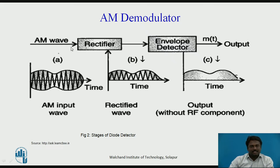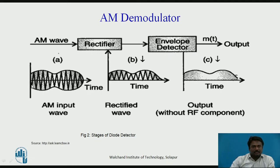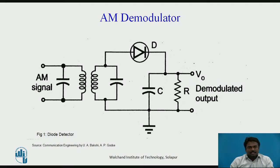The AM wave is given as input to the rectifier circuit, and the positive half cycle appears at the output. This signal is given as input to the envelope detector and we get the envelope of the input signal. In the signal we can see there are two envelopes — one upper and one lower — consisting of a high frequency carrier signal. The diode conducts during forward bias, that is during the positive half cycle of the AM signal, and the diode is reverse biased during the negative half cycle, during which it does not conduct.